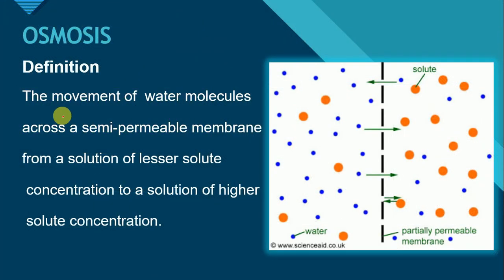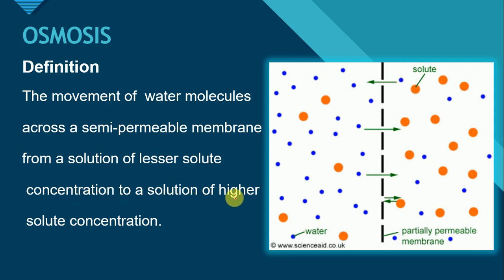Let's start with the definition of osmosis. The movement of water molecules across a semi-permeable membrane from a solution of lesser solute concentration to a solution of higher solute concentration is called osmosis.